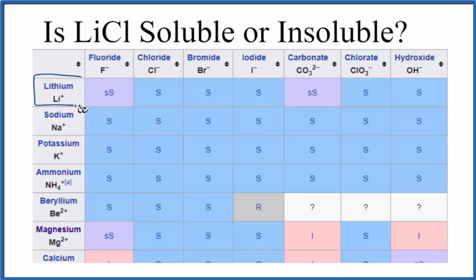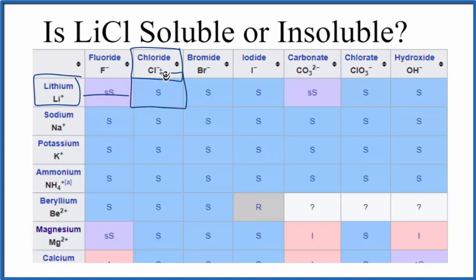So let's see how this works. We have lithium right here, and then we have that chloride ion right there. We go down and then over, and we can see that lithium chloride has an S. That means that it's soluble when it's put in water. It'll dissolve. It'll break apart into the Li+ and the Cl- ions. So this is the same thing that the rules told us, that it's soluble in water.